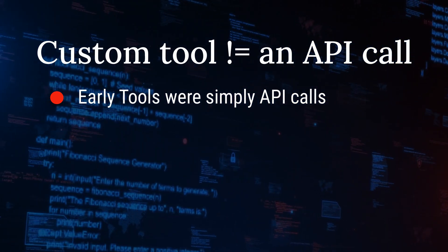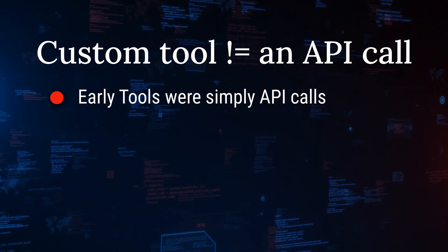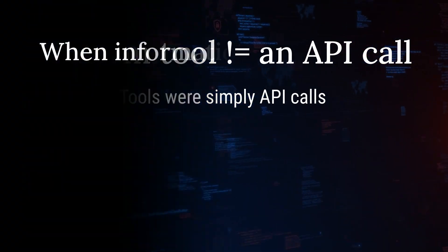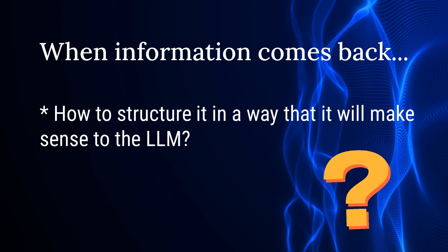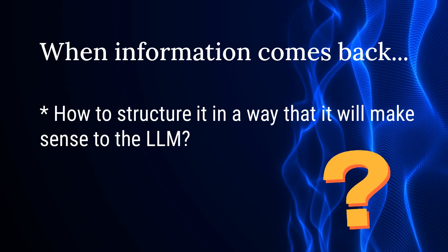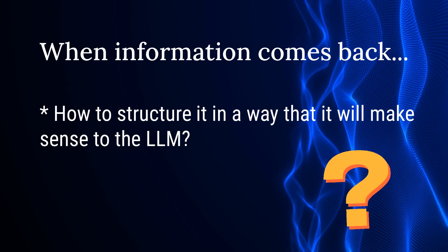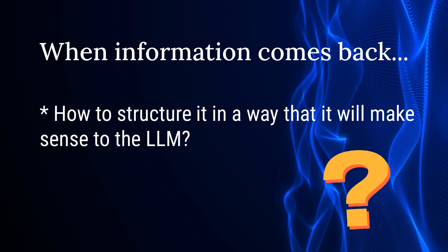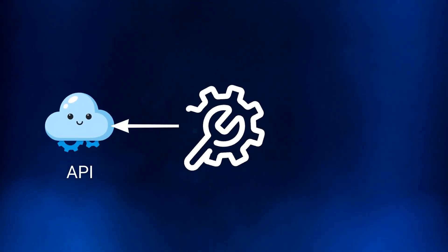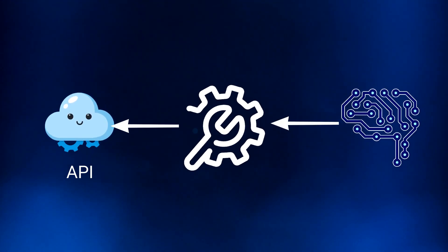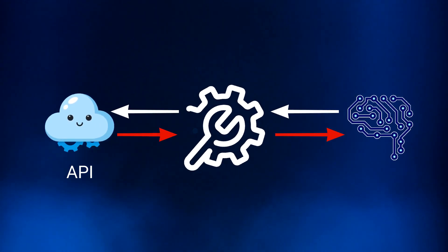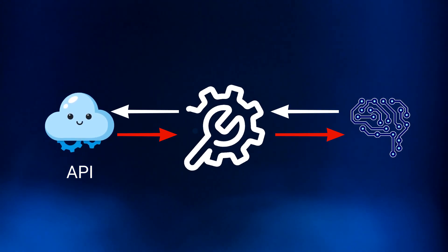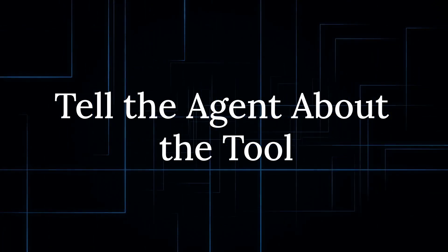On the flip side, you've got the handling of output back from a tool and getting it back into something the LLM can use. If we're talking about API calls, when information comes back, how do you structure it in a way that makes sense to the LLM? You really don't want to just pass raw HTML to an LLM — you're wasting a lot of tokens and creating huge areas for confusion. You want your tool to sit in the middle, triggering the API call while also handling the LLM output to prepare it for that call, and formatting the return so it can be sent back to the agent.